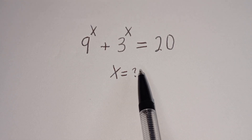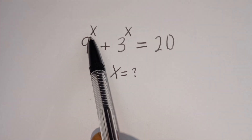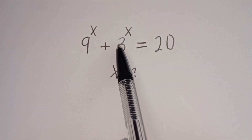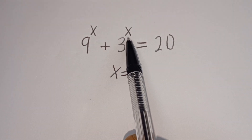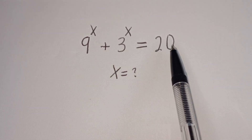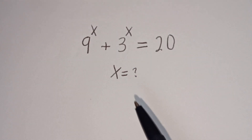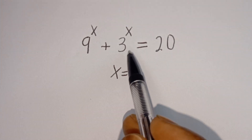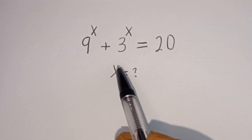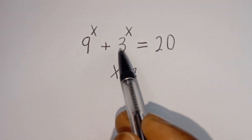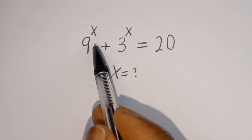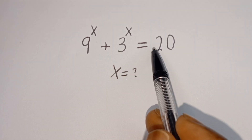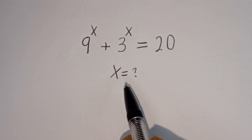How to solve for x in this equation: 9 to the power of x plus 3 to the power of x is equal to 20. We quickly want to find the value of x in this equation, but before we proceed, please don't forget to like, share, comment, and subscribe.